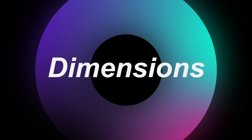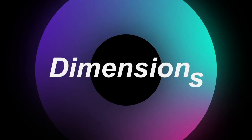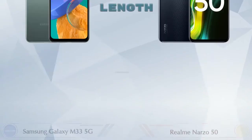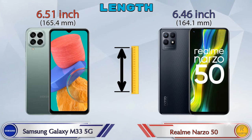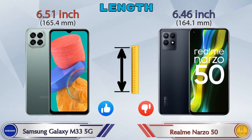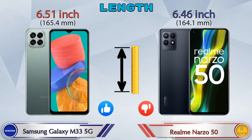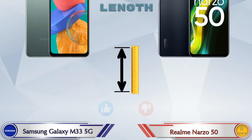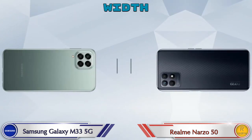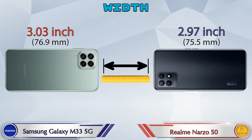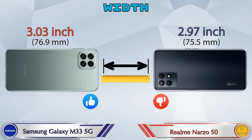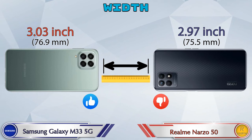Now let's check the details about dimensions. The length of the Galaxy M33 5G is 6.51 inches and the Narzo 50 is 6.46 inches, which is less than the Galaxy M33 5G. The width of the Galaxy M33 5G is 3.03 inches and the Narzo 50 is 2.97 inches, which is also less than the Galaxy M33 5G.